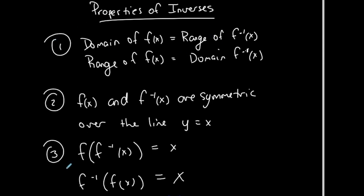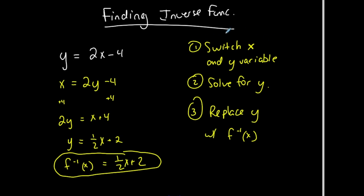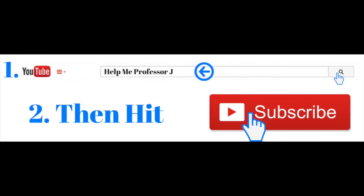In summary: to find an inverse, switch your x and y variables and solve for y, using proper inverse notation. Inverses only exist if the function passes both the vertical and horizontal line tests — meaning it's one-to-one: for every x there corresponds exactly one y, and for every y exactly one x. You can verify inverses three ways: check the composition in both directions (both should simplify to x), graph them and check for symmetry over y equals x, or confirm that the domain and range swap between the function and its inverse.